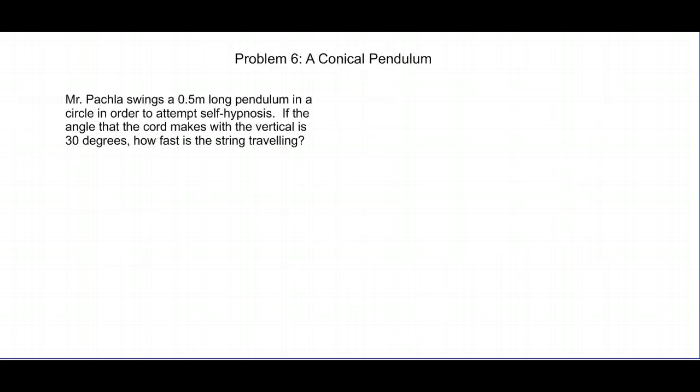So, our final problem, then, is the conical pendulum problem. I have a 0.5 meter long pendulum in a circle, swinging in a circle that I'm trying to help self-hypnotize myself with. You're given that the angle between the chord and the vertical is 30 degrees, and I'm asking you to tell me how fast the string is traveling. Now, this problem is rather difficult. So, let's take a look at what's going on.